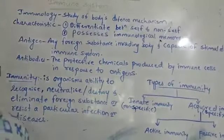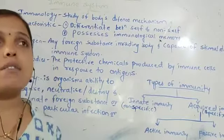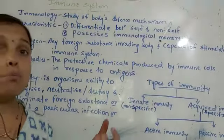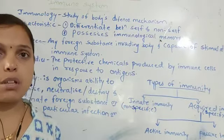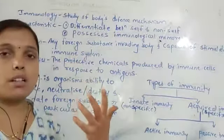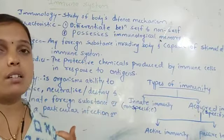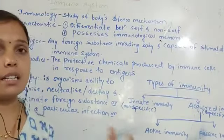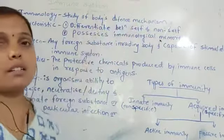The immune system consists of structures including tissues, tonsils, pharyngeal tonsils, adenoids, bone marrow, lymph nodes, and spleen. These together form the immune system — a vast collection of structures that together make up the complete immune system.